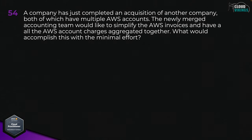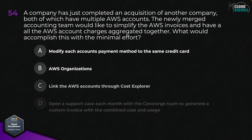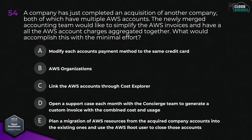Question fifty-four: a company has just completed an acquisition of another company, both of which have multiple AWS accounts. The newly merged accounting team would like to simplify the AWS invoices and have all the AWS account charges aggregated together. What would accomplish this with the minimal effort? Options are: A, modify each account payment method to the same credit card; B, use AWS Organizations; C, link the AWS accounts through Cost Explorer; D, open a support case each month with the AWS concierge team; or E, plan a migration of AWS resources and close leftover accounts. The correct answer is B, to use AWS Organizations.